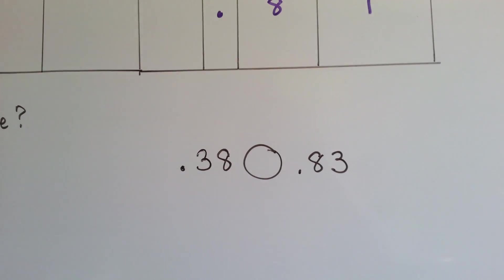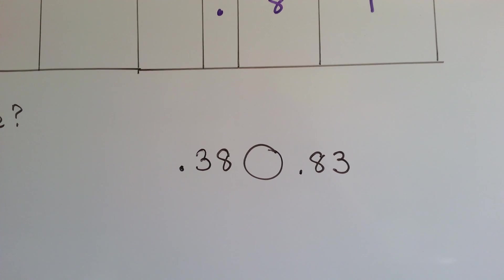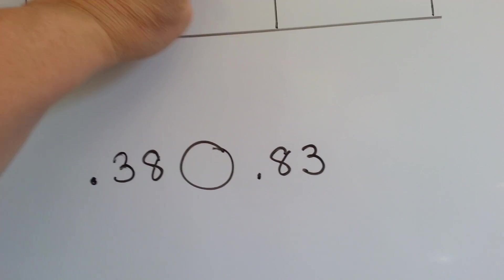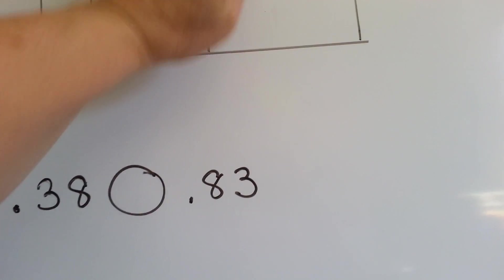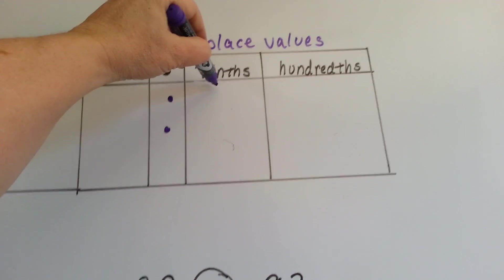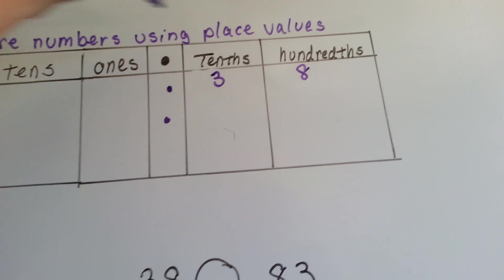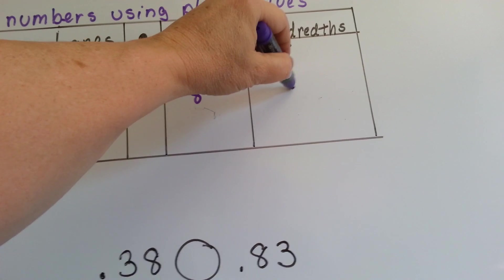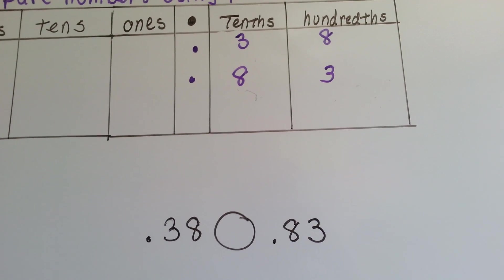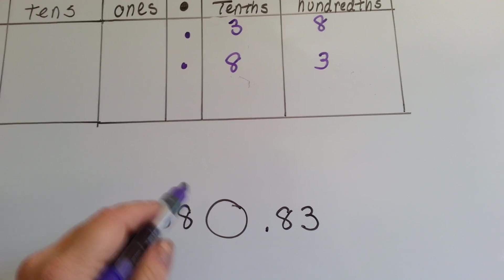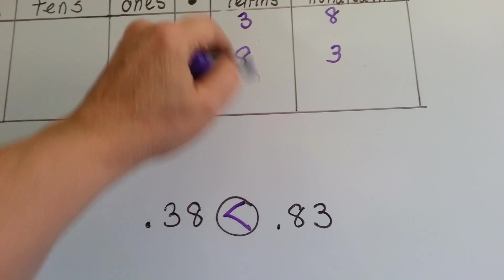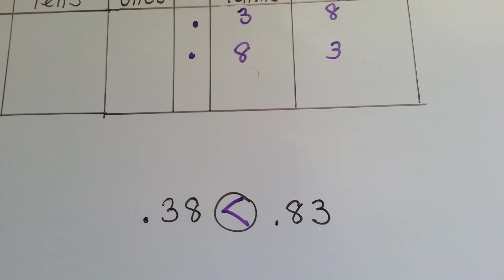What about thirty-eight-hundredths or eighty-three-hundredths? Which one's bigger? Eighty-three is much bigger than thirty-eight, because there's an eight in the tenths place.